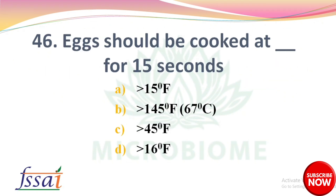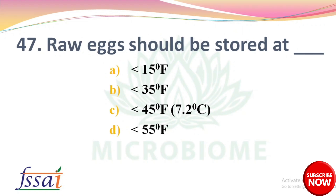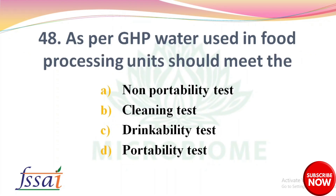Next: Eggs should be cooked at dash for 15 seconds — options: more than 15°F, more than 145°F, more than 45°F, more than 16°F. The right answer is option B, more than 145 degrees Fahrenheit, that is 67 degrees Celsius. Next: Raw eggs should be stored at — options: less than 15°F, less than 35°F, less than 45°F, less than 55°F. The right answer is less than 45 degrees Fahrenheit, that is 7.2 degrees Celsius.